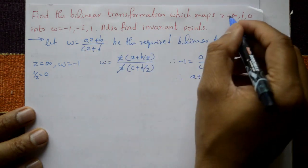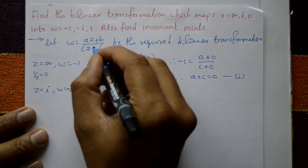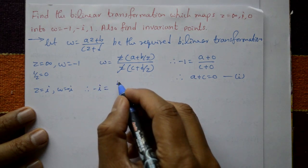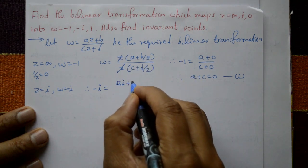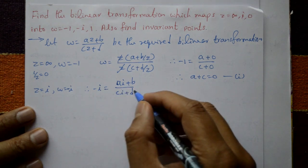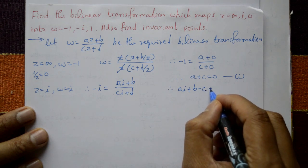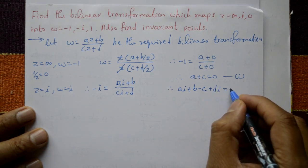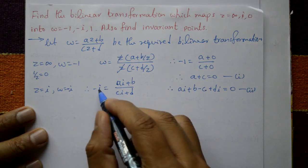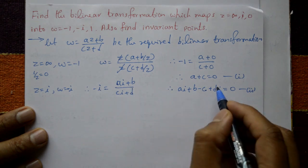Second case: z equal to i and w equal to minus i. Substituting, minus i equals (ai + b) / (ci + d). Multiplying and rearranging gives ai plus b minus c plus di equal to 0. This is equation number two.